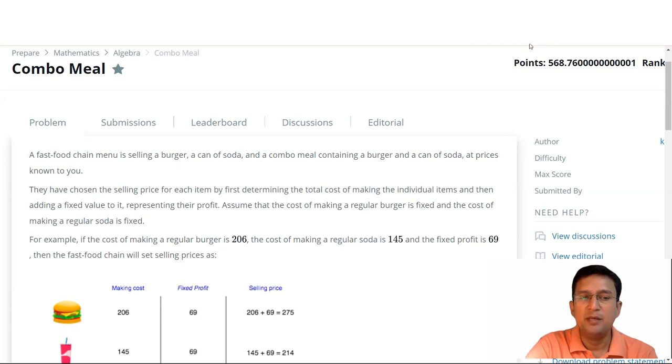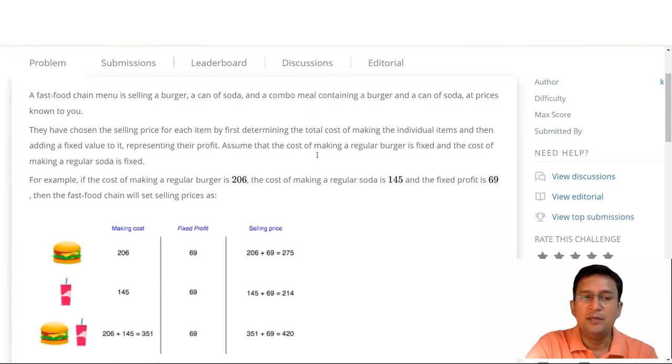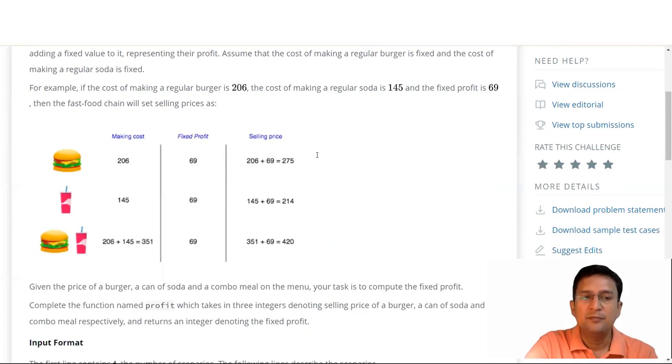For example, if the cost of making the regular burger is 206, the cost of making regular soda is 145, and the fixed profit is 69, then the fast food chain will be setting the prices as: for the burger it will be 206 plus 69 equals 275. For the can of soda, it will be 145 plus 69 equals 214. And for Combo, it will be 206 plus 145 plus 69, that equals 420.